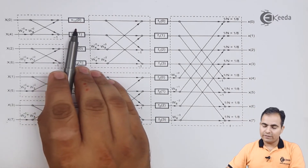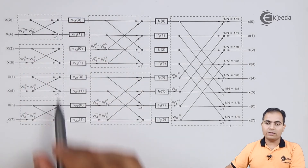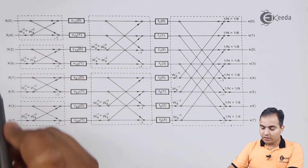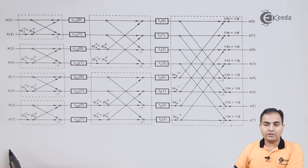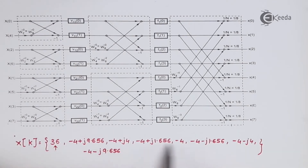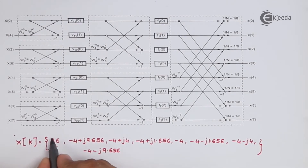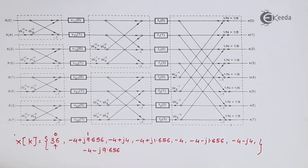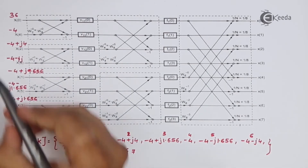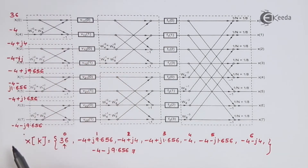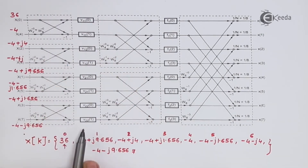First we will calculate v11[0] to v22[1] — all these first 8 values. I am going to place all my input sequence values and substitute all the values of the input sequence. This was our X[k] sequence, with this as the origin value. The next samples are x[1], x[2], x[3], and x[7]. I will substitute all these values on the input side of the butterfly diagram.